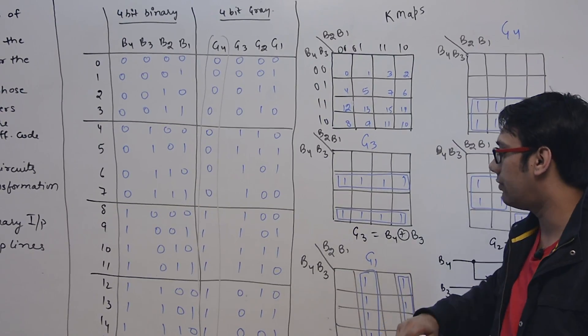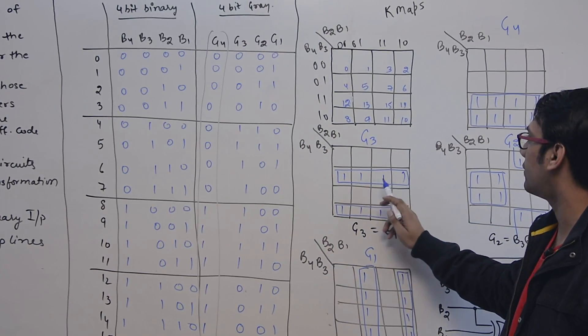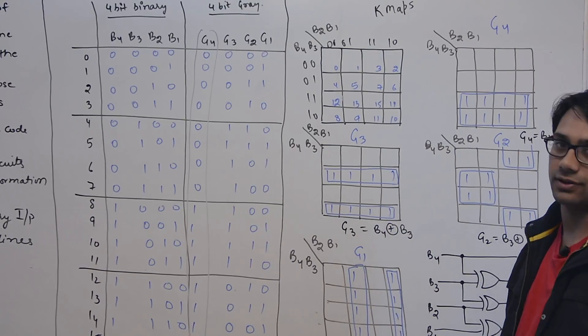In the same way, if you want to write for G3, then G3 is 1 at 4, 5, 6, 7, 8, 9, 10, and 11. So it is G3 summation of 4, 5, 6, 7, 8, 9, 10, and 11. In the same way, G3 is 1 at 4, 5, 6, 7, 8, 9, 10, 11.